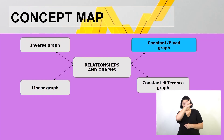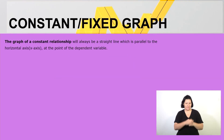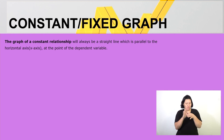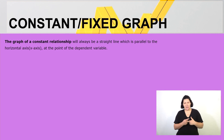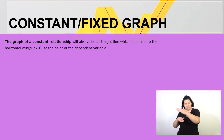Now let's look at our first section. Don't forget to bring your calculators so that we can calculate together. The first one we are looking at is the constant or fixed graph. The graph of a constant relationship will always be a straight line which is parallel to the horizontal x-axis, at the point of the dependent variable.